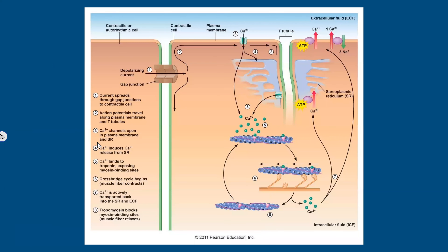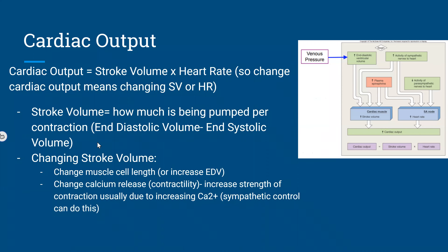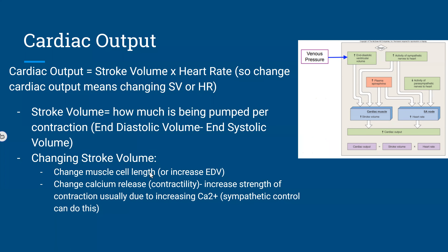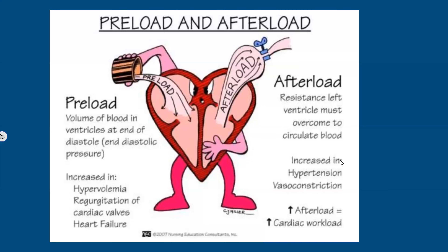Cardiac output equals stroke volume times heart rate. So changes in cardiac output mean you've either changed stroke volume or heart rate. Changes to stroke volume can be made by changing muscle length or changing calcium release to increase contraction strength. There's also a diagram here covering preload and afterload — useful terms that come up frequently.